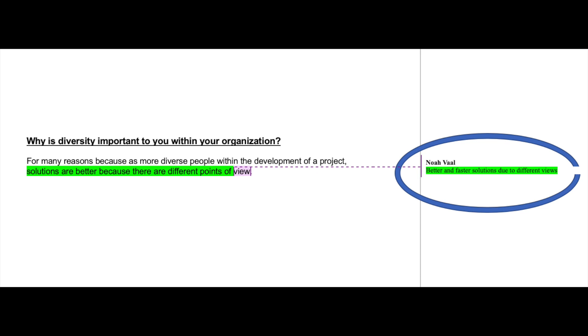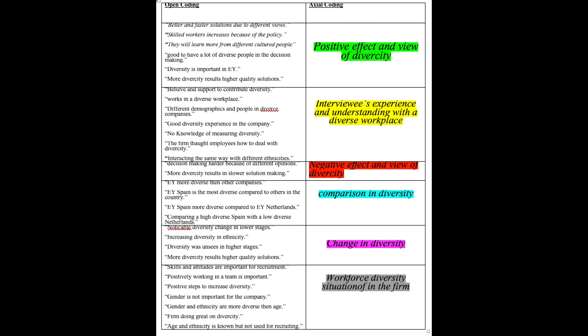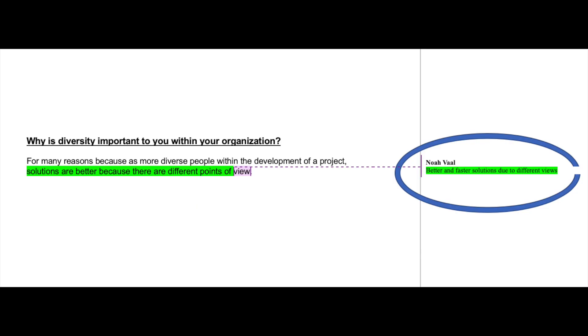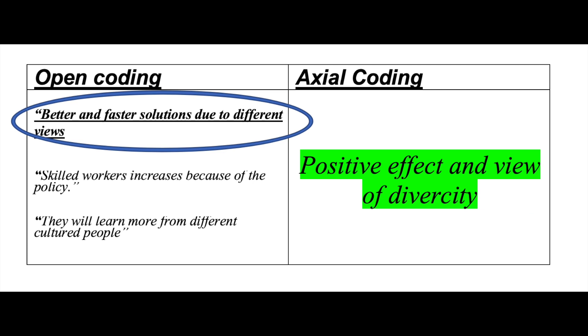After the open coding part, we can now take a look at the actual coding. Here we will be looking into relationships between the categories from the open coding and how they relate to each other, making new themes again. We have merged and categorized the open coding labels into actual coding. To take the same example as before, the 'better and faster solutions due to different views' have been put into the label 'positive effects of diversity.'